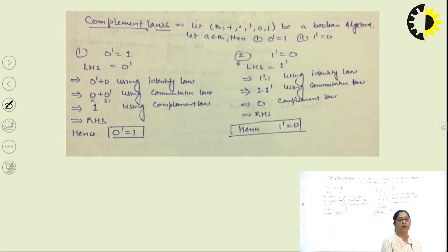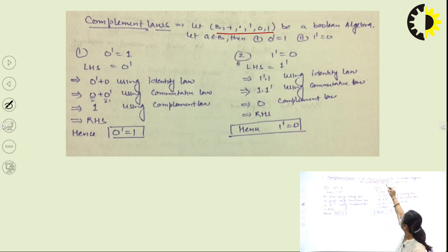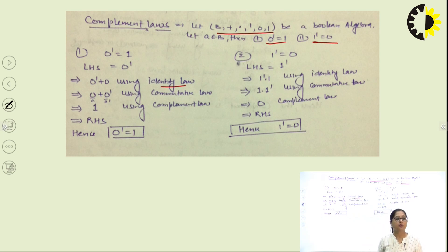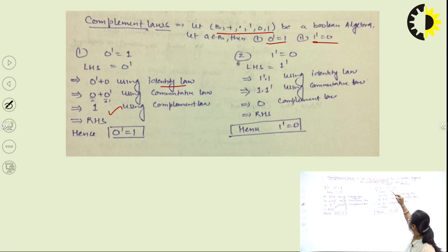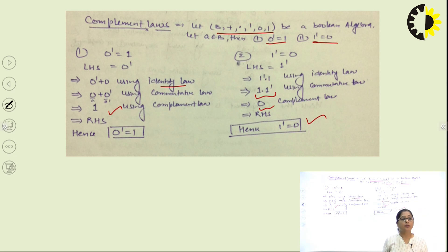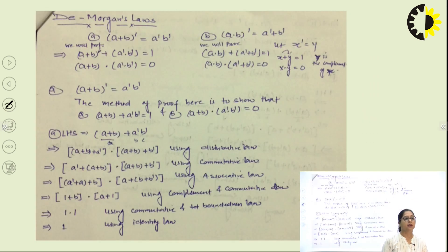Next is the complement law. We prove that 0-complement equals 1 and 1-complement equals 0. For 0-complement: 0 plus 0-complement, using identity and complement properties gives 1. For 1-complement: 1 dot 1-complement, using identity law and commutative law gives 1 dot 1-complement equals 0. This proves the complement law: 0-inverse equals 1 and 1-inverse equals 0.